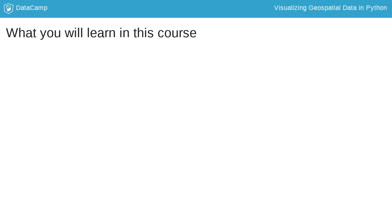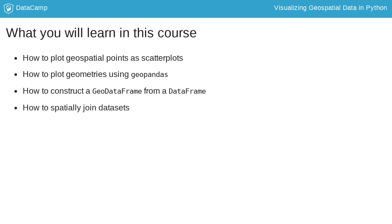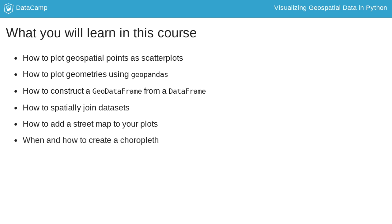You will learn how to use location to discover meaning with data, including how to plot location points on a map as a scatter plot, how to plot geometries using GeoPandas. You'll learn to construct a GeoPandas GeoDataFrame from a pandas DataFrame, and you'll learn to join two GeoDataFrames so that they are spatially related. You'll get practice adding a street map to give even more context to your visualizations, and you will learn when and how to create a choropleth in order to compare different regions to one another.